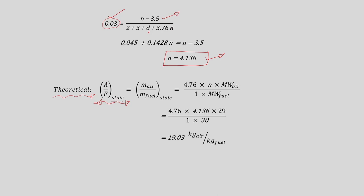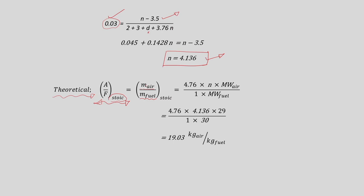The air-to-fuel ratio (stoichiometric) equals the mass of air required divided by the mass of fuel required. The mass of air is represented as 4.76 (1 mole O2 + 3.76 moles N2) multiplied by N and the molecular weight of air. Multiplying moles by molecular weight gives the mass of air required.